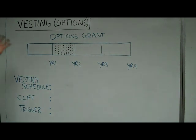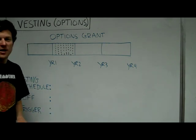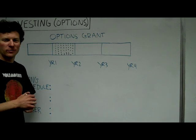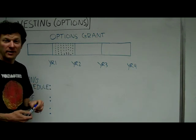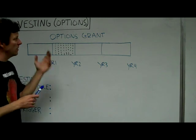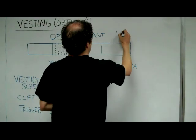All right, options vesting, specifically vesting. This is a subject that's popular with entrepreneurs because it means you are accruing options over time. When you get an options grant from your company, in this case let's say you get a thousand shares.